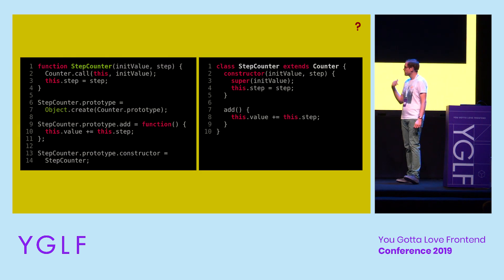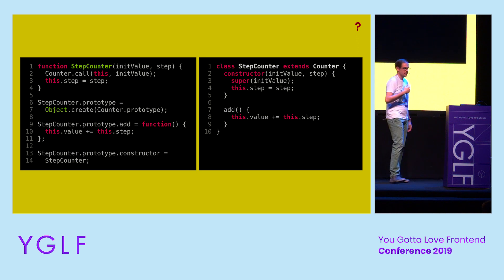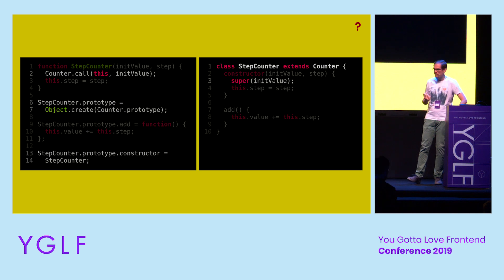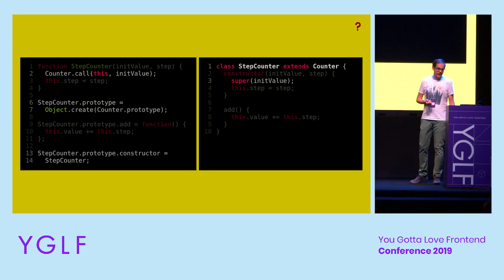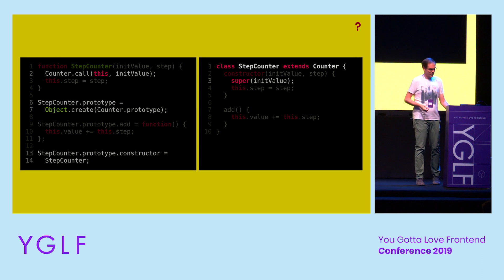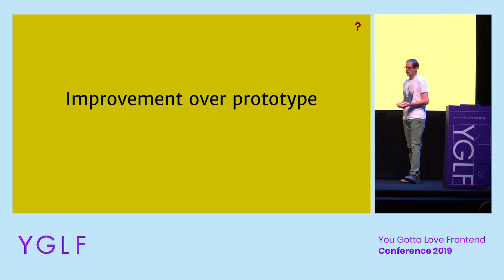However, when you try to do classical inheritance with prototypes, things get much uglier and messy. Here's a step counter that inherits from the counter before — it gets a new step parameter, and the add method is overridden. With prototypes, we have to do some weird stuff — not very pretty. Whereas with classes, we just use the extends keyword and call super in the constructor, and that's it. Classes seem to improve over prototypes, at least in terms of syntax.